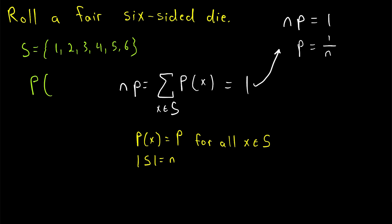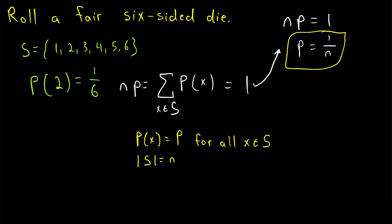So that's how we know that the probability of rolling any one number on a fair six-sided die is 1 over 6. In this case, n is equal to 6 — that's the number of possible outcomes — and P, the probability of each outcome, is 1 over 6. Note that since we're dividing by n, this rule only applies to experiments with more than zero possible outcomes, which is a fine restriction because we're not very interested in experiments that have zero possible outcomes.